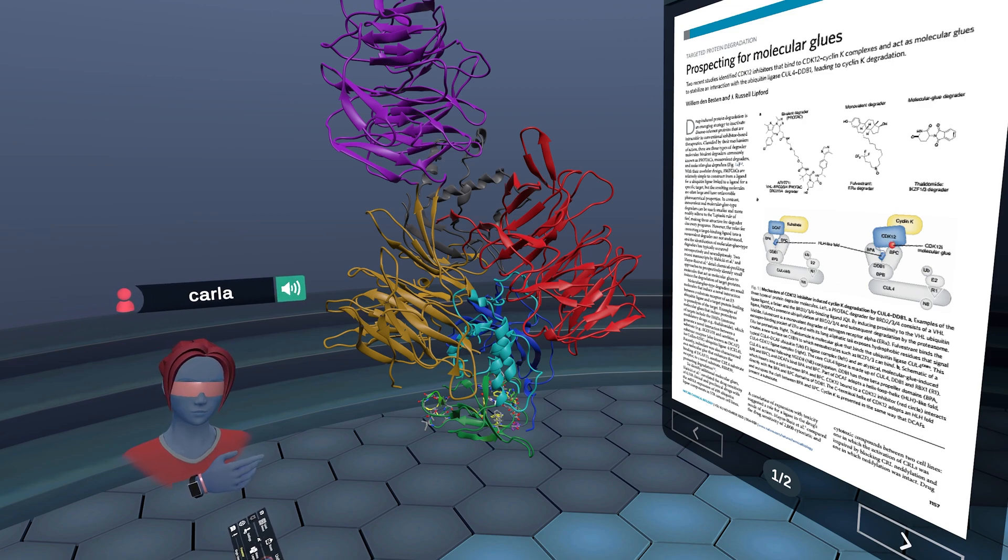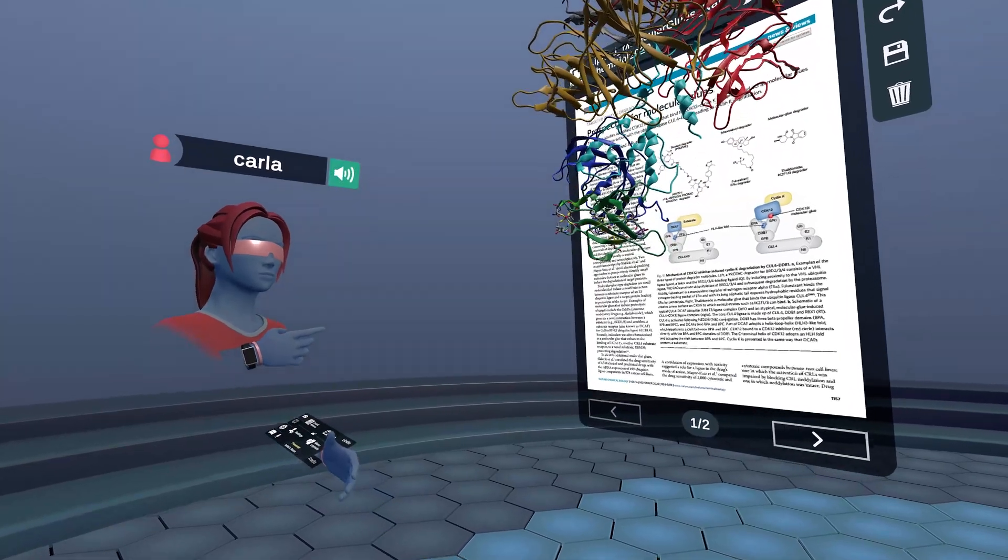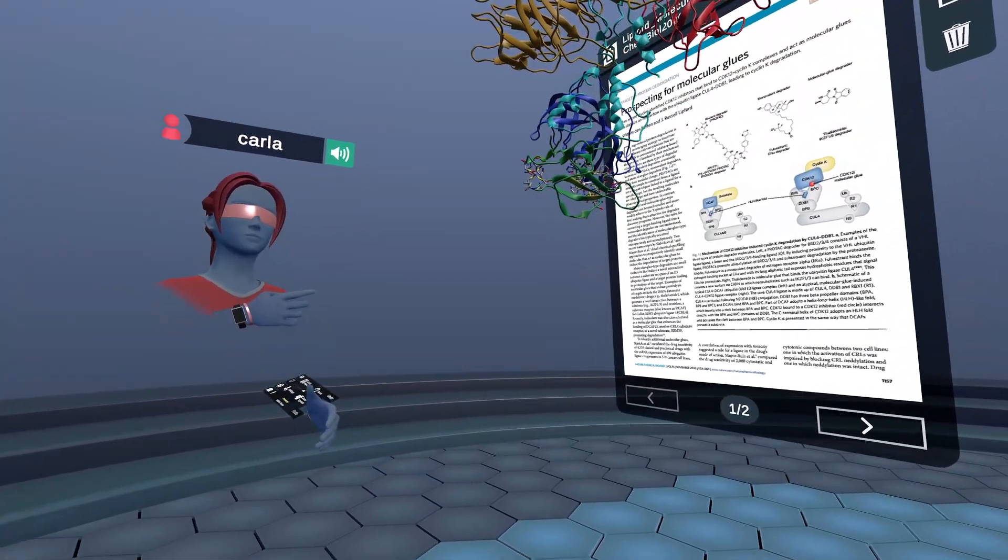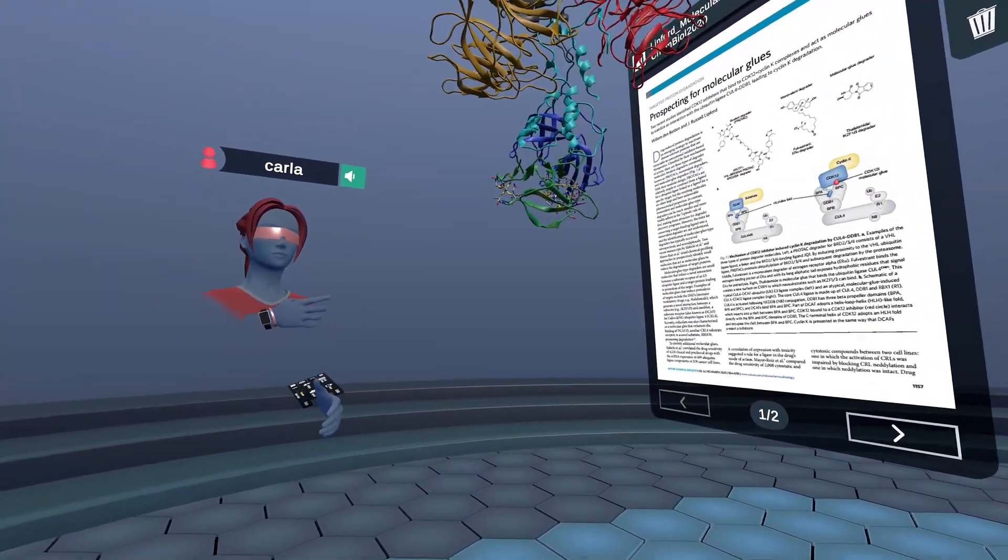Molecular glues work by inducing an atypical interaction between a target protein of interest and a substrate receptor of an E3 ubiquitin ligase, resulting in degradation of the target.